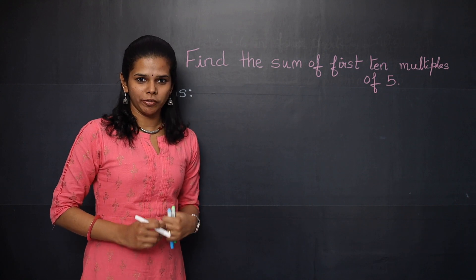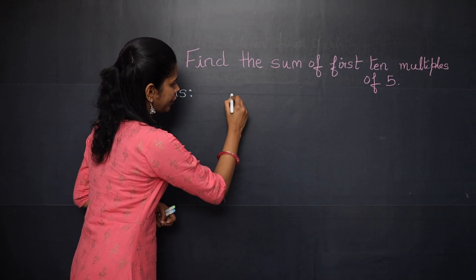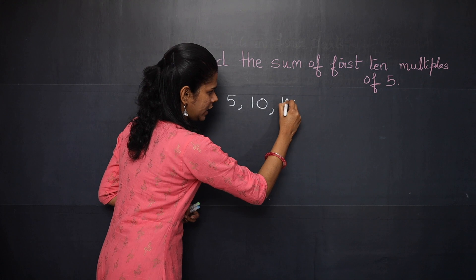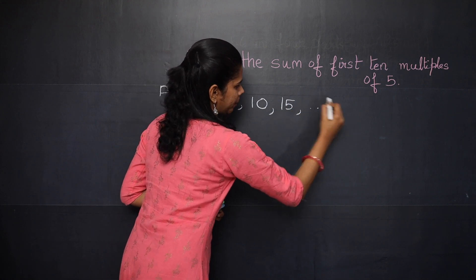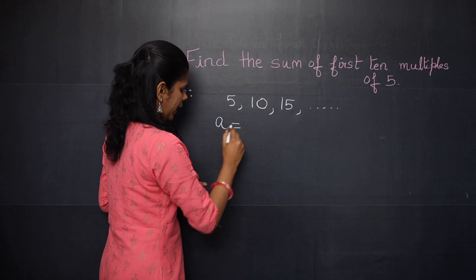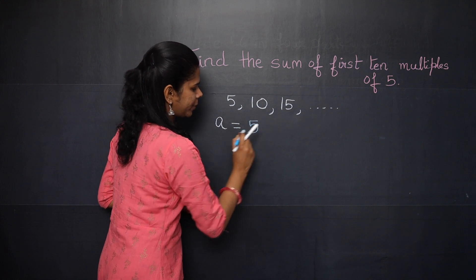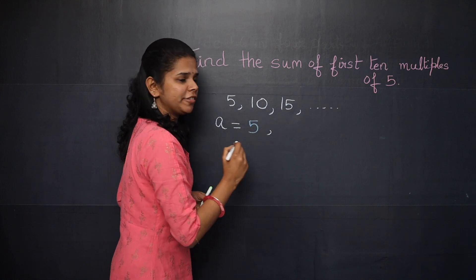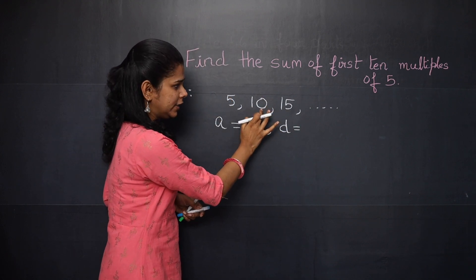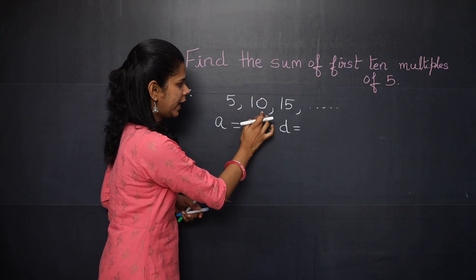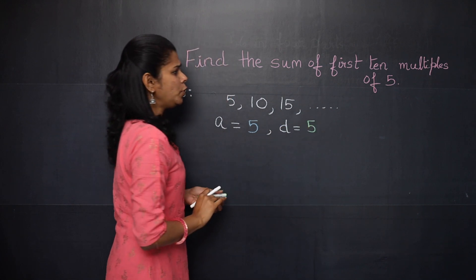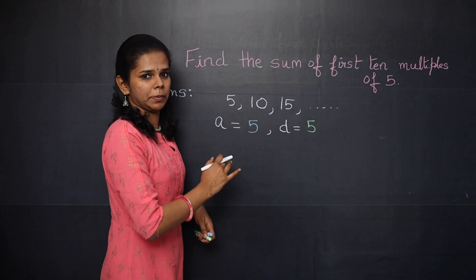Next example: find the sum of the first 10 multiples of 5. We take the numbers 5, 10, 15, ... 50, etc. Here the first term a = 5, and the common difference d = 10 − 5 = 5.